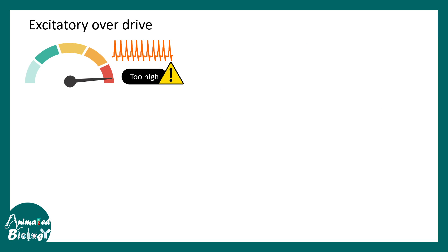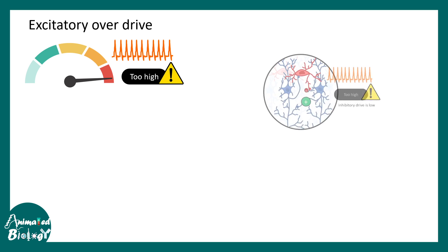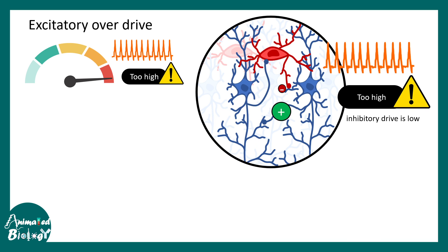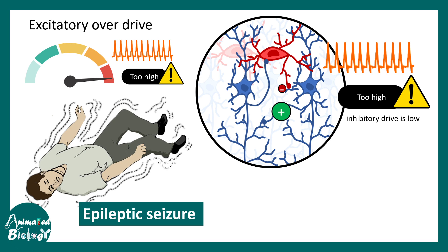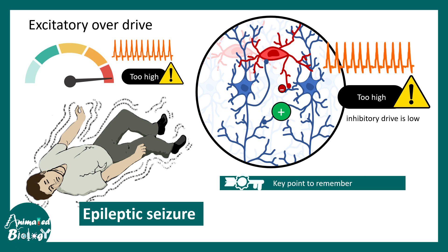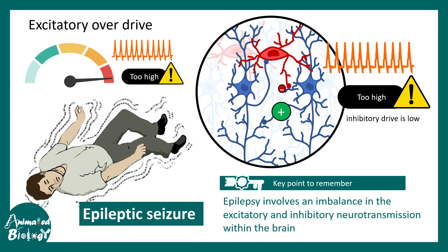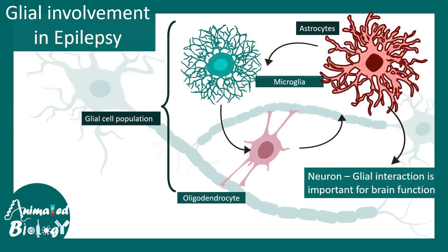Generally, homeostatic scaling acts as a safety mechanism to prevent excitotoxicity, but in epilepsy this mechanism goes wrong. When there is excitatory overdrive or reduced inhibitory drive, the ultimate result is uncontrolled, unchecked activity leading to epileptic seizures. The key point to remember is that epilepsy is due to an imbalance in excitatory-inhibitory neurotransmission in the brain.